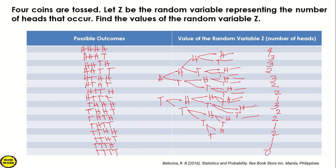So what are the possible values of Z? The possible values for Z are: zero, one, two, three, and four. These are the possible values of the random variable Z.